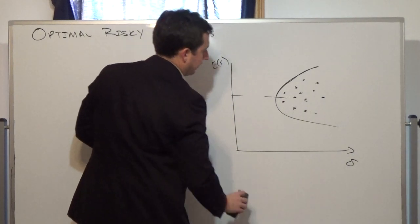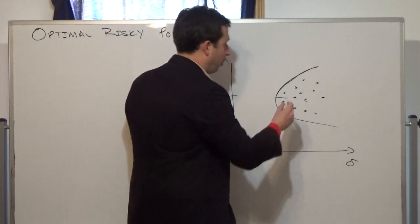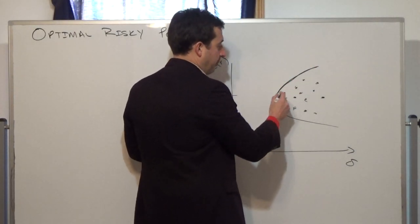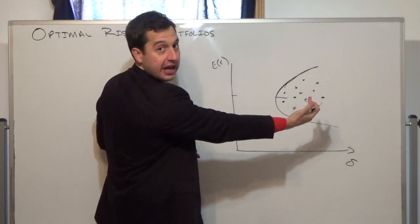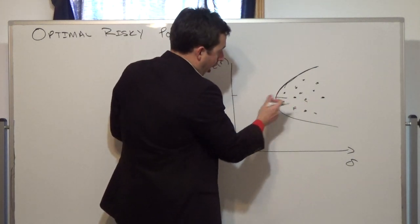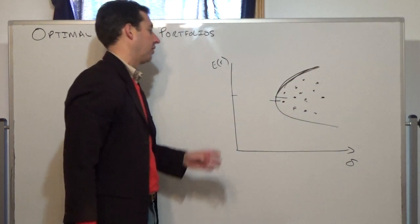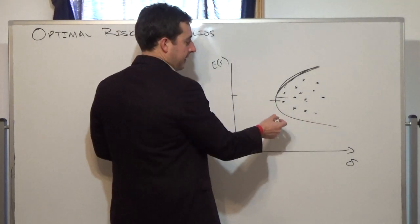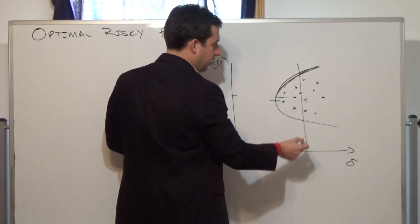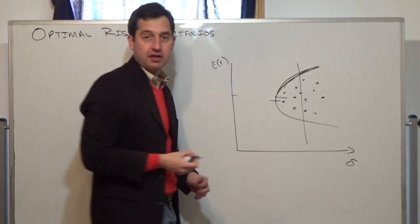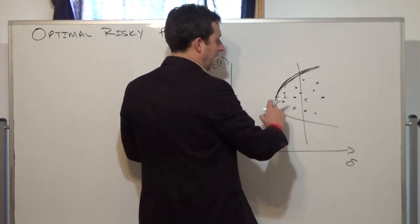Only the top half of this curve is relevant. We could invest anywhere on the curve, but we would want to invest on the upper half rather than the lower half, because for the same expected return the upper half gives us lower risk. Also, if this is our minimum variance portfolio, we would only invest on the upper half — given two points at the same risk level, I would always choose the one with higher expected return.